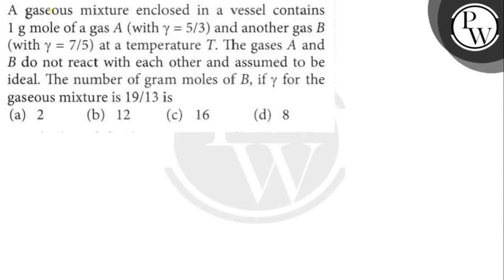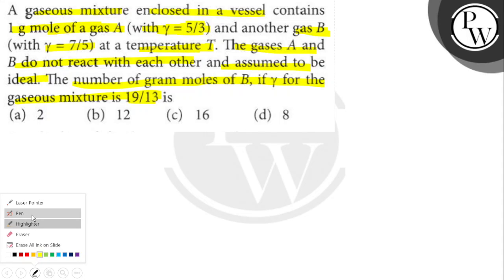A gaseous mixture enclosed in a vessel contains one gram mole of gas A with gamma 5/3, and another gas B with gamma 7/5, at temperature T. The gases A and B do not react with each other and are assumed to be ideal. Find the number of gram moles of B if gamma for the mixture is 19/30.